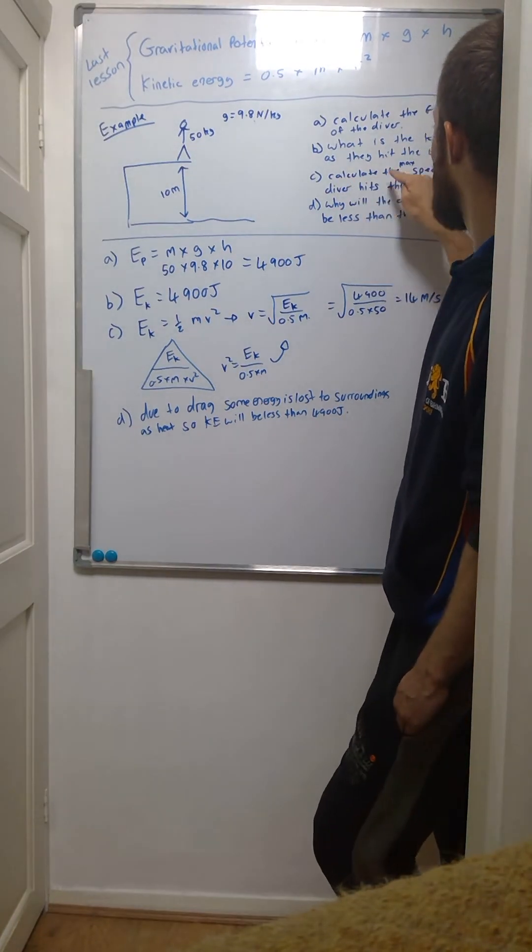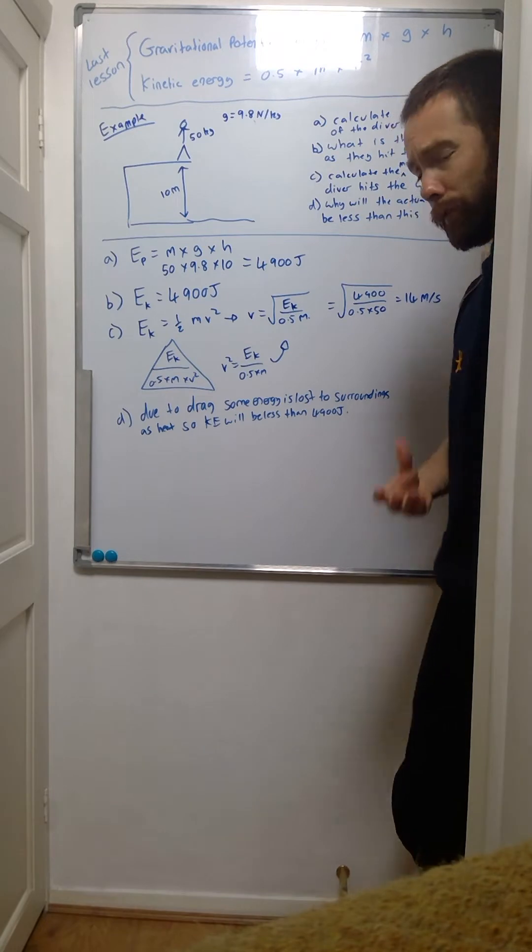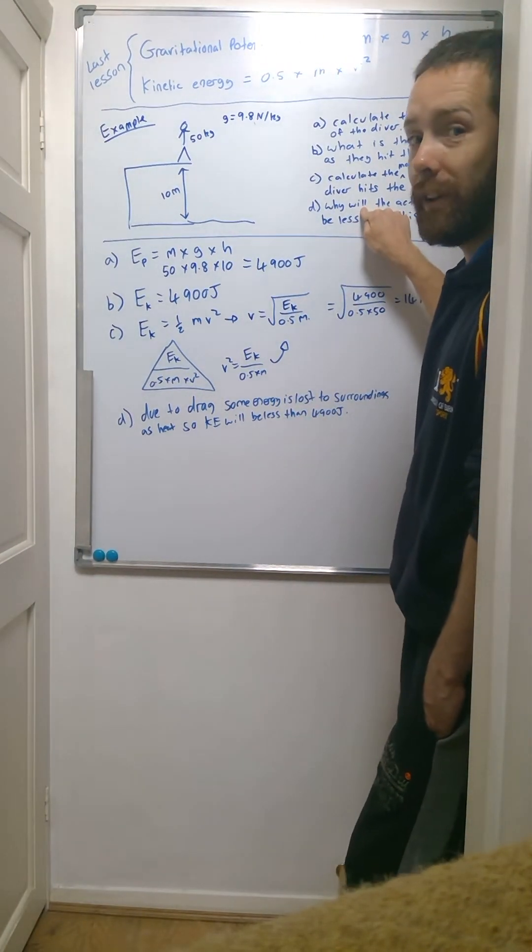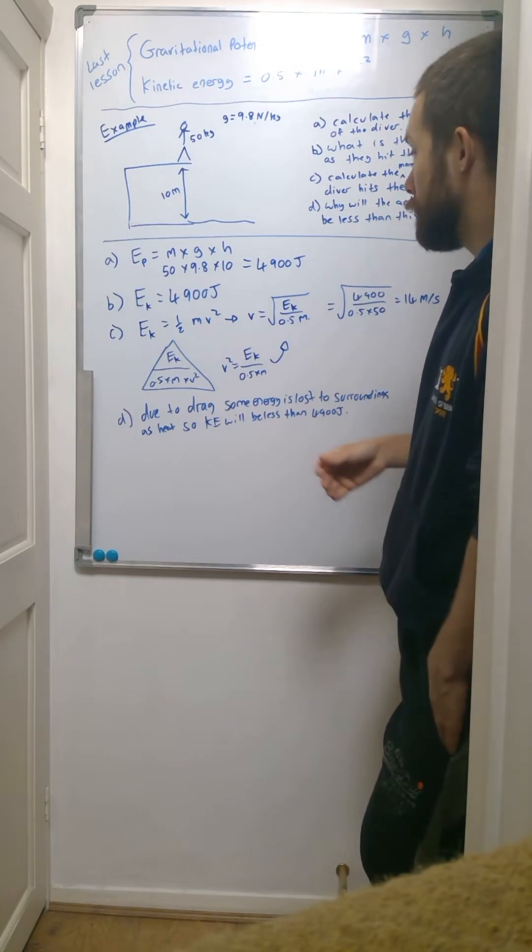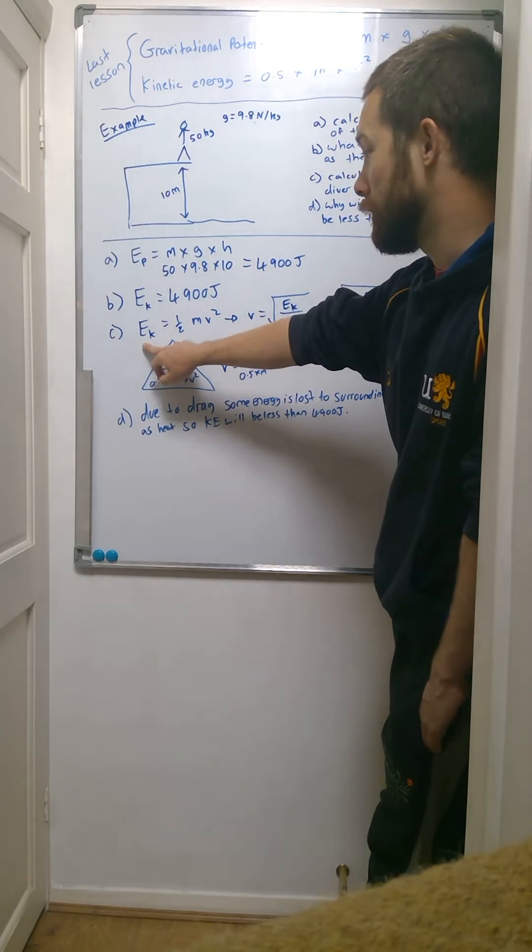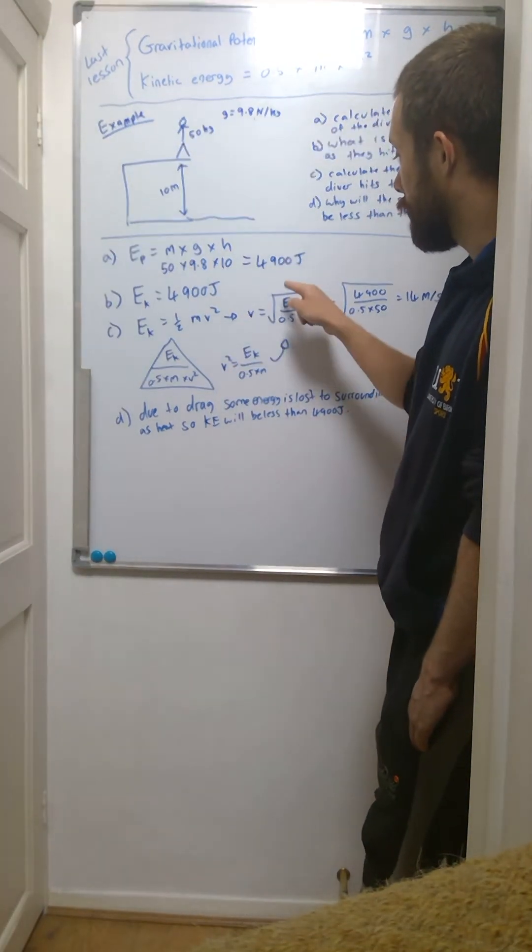Calculate the maximum speed that the diver hits the water. Now the reason for the word 'maximum' here we're going to talk about in more detail in part d, but basically we're just going to have to rearrange this equation. The kinetic energy equation - again you need to learn this - half mv squared. We can rearrange it.